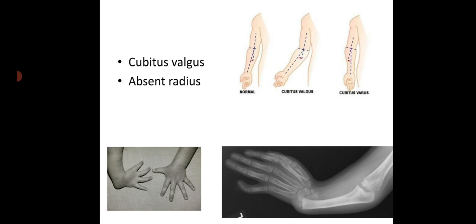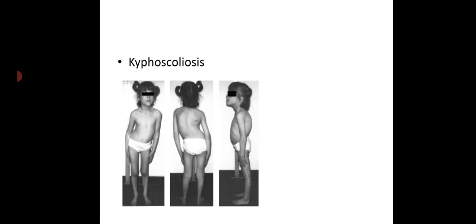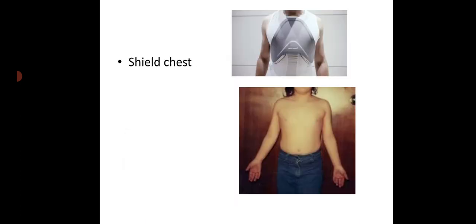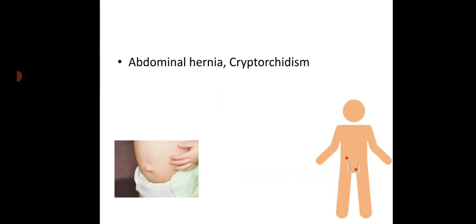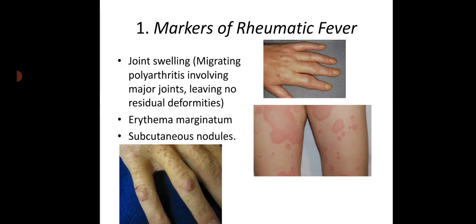Also look for cubitus valgus, absent radius, pectus excavatum, pectus carinatum, kyphoscoliosis, shield chest, abdominal hernia, cryptorchidism, upper segment to lower segment inequality, dwarfism, and gigantism. In acquired heart disease, look first for markers of rheumatic fever.